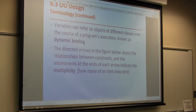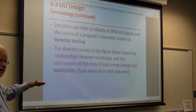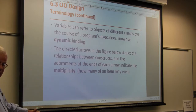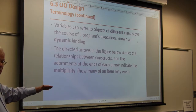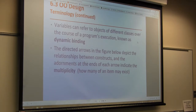Variables can refer to objects of different classes, and we may go across classes during program execution — we call that dynamic binding. We'll show directed arrows in our diagrams to depict relationships, indicating what is feeding what. At the end of the arrows we'll talk about multiplicity — for instance, an invoice may have multiple line items, which is a 1-to-N relationship.